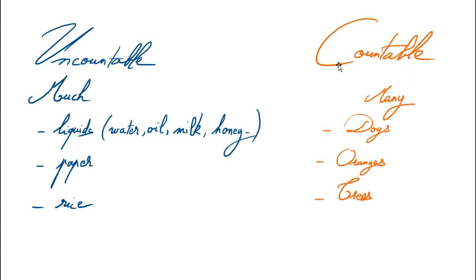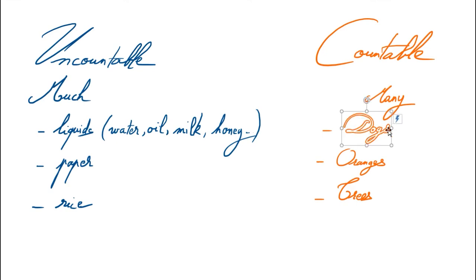Countable nouns go with MANY. You can use MANY in affirmative, negative, and interrogative sentences. For example, with DOGS: I HAVE THREE DOGS — actually, I wish I had them!